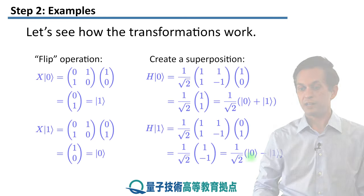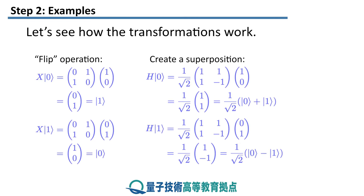And you can do the same thing for 1. And again, as we have seen in the previous step, you get 0 minus 1. Again, an equal superposition.